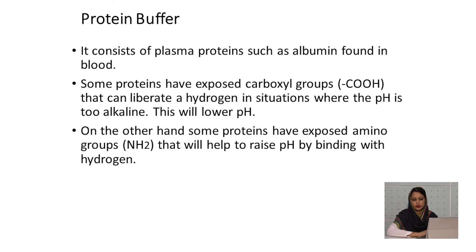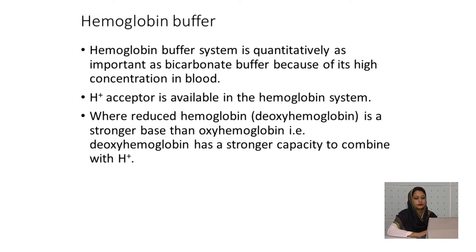Protein buffer consists of plasma proteins such as albumin found in blood. Some proteins have exposed carboxyl groups that can liberate hydrogen when the pH is too alkaline, thereby lowering the pH. Some proteins have exposed amino groups, which help to raise the pH by binding with hydrogen. Hemoglobin buffer system is quantitatively as important as bicarbonate buffer due to its high concentration. The hydrogen acceptor available in the hemoglobin system is reduced hemoglobin (deoxyhemoglobin), which is a stronger base than oxyhemoglobin.